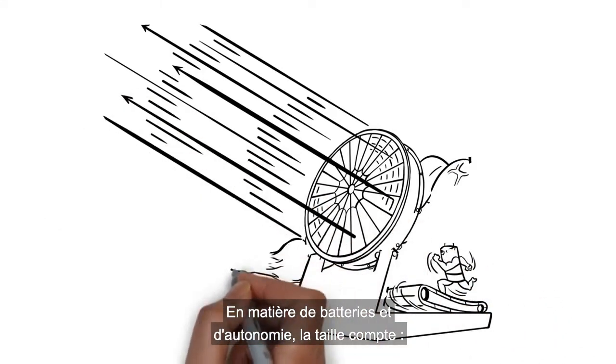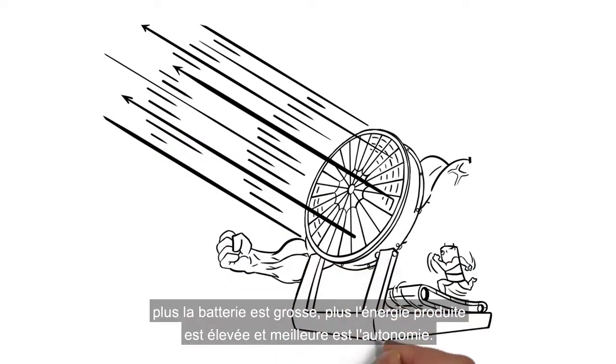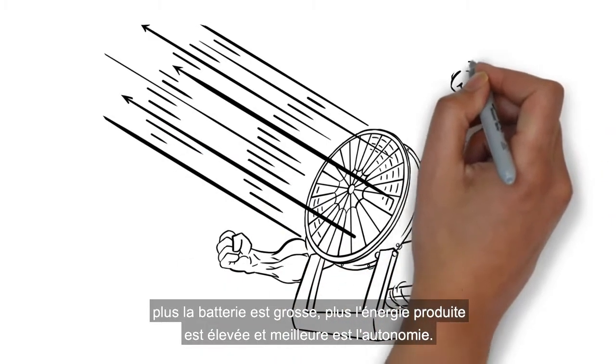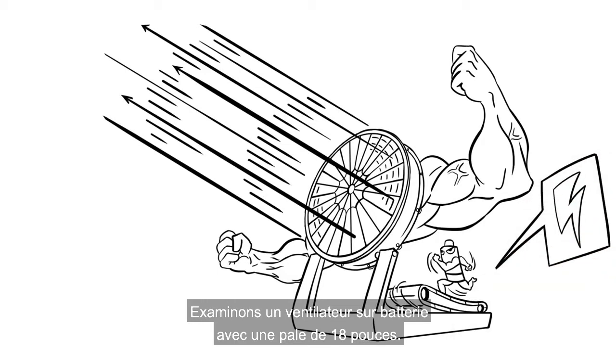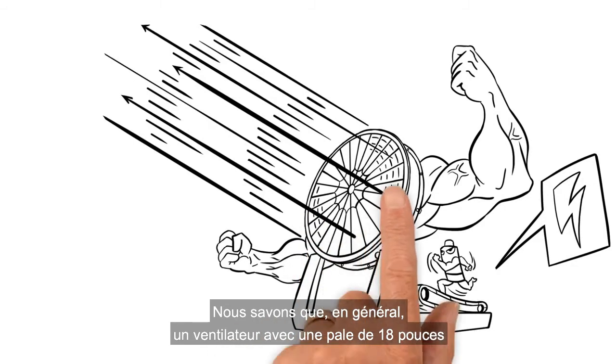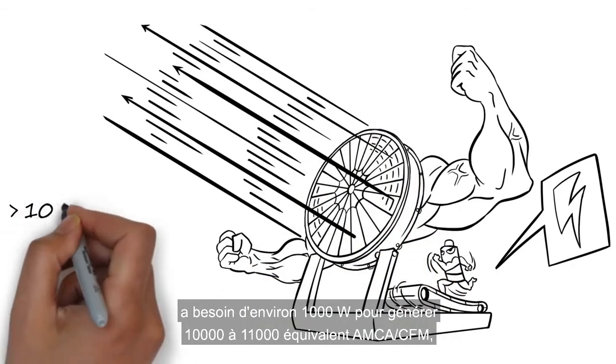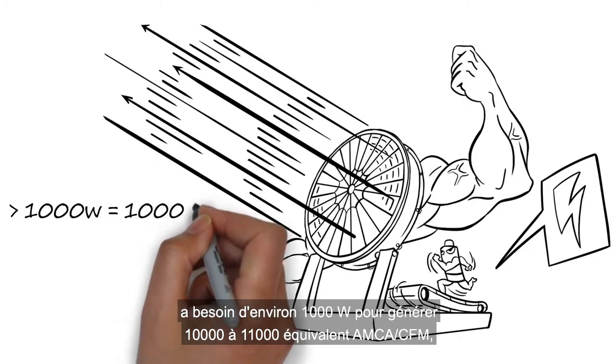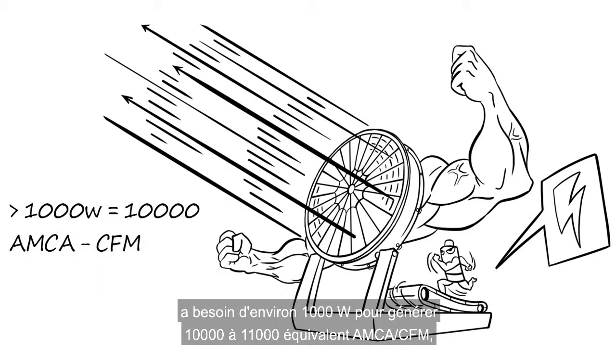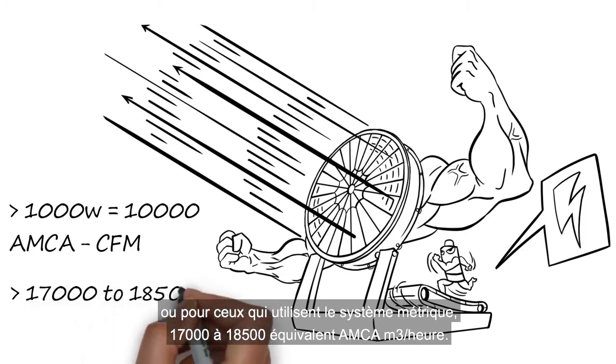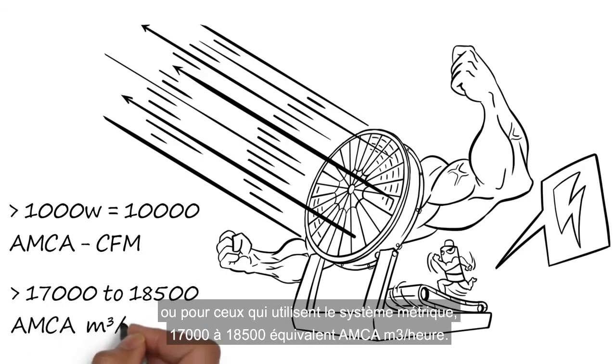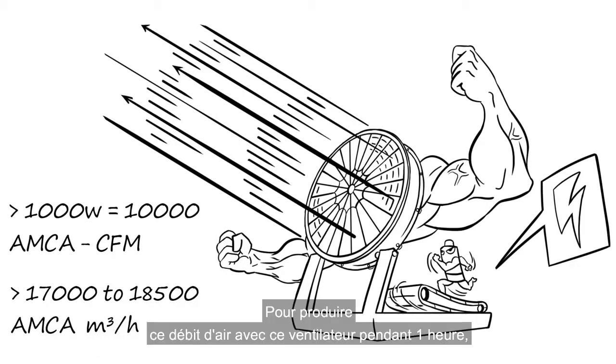Size matters. The bigger the battery, the higher the watt-hour, the longer the runtime. Let's evaluate a battery-driven fan with an 18-inch blade. We know that in general, a fan with an 18-inch blade would require about 1,000 watts to generate 10,000 to 11,000 AMCA equivalent cubic feet per minute, or for those using the metric system, 17,000 to 18,500 AMCA equivalent meters cube per hour.